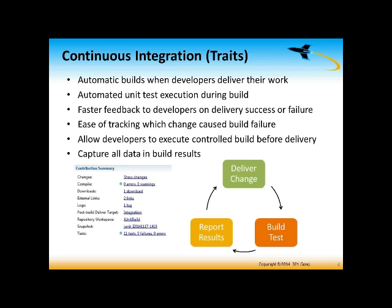For continuous integration to actually work, automatic builds need to happen as soon as the developer finishes their work. Upon delivery, kick off an automatic build, have that build perform automated unit testing, and then report the results back to the developer in a reasonable amount of time. This gives fast feedback on delivery success or failure. You can also trace exactly which delivery caused the build to fail, allowing you to fix builds faster.